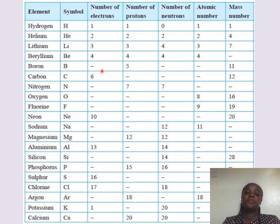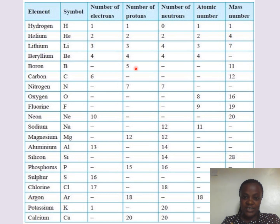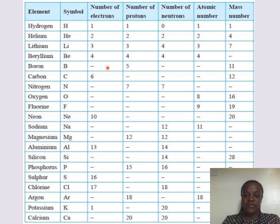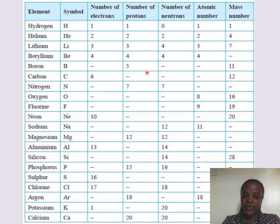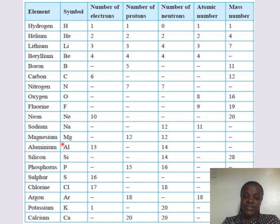For boron, the number of electrons is missing. The number of protons is five. Since the number of protons equals the number of electrons, the number of electrons is also five. For the neutrons: mass number equals neutrons plus protons, so neutrons equal 11 minus 5, giving us six. The number of neutrons of boron is six.